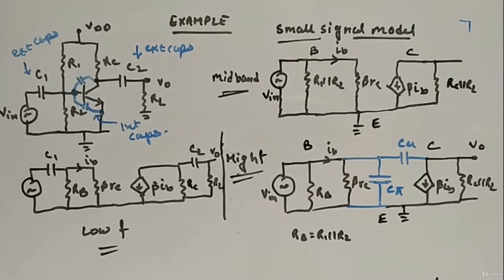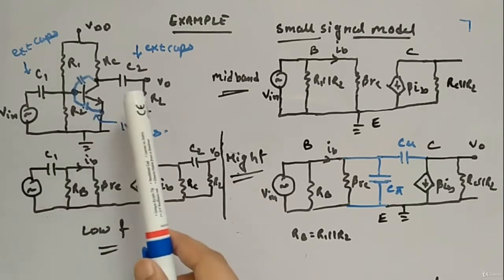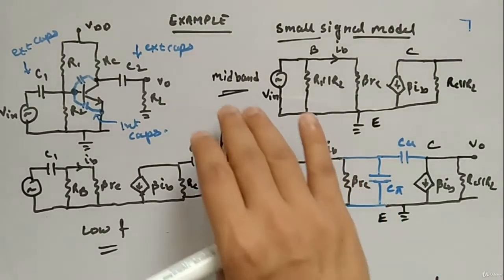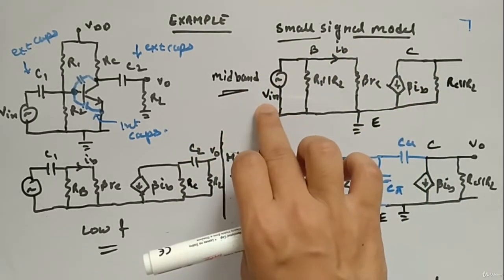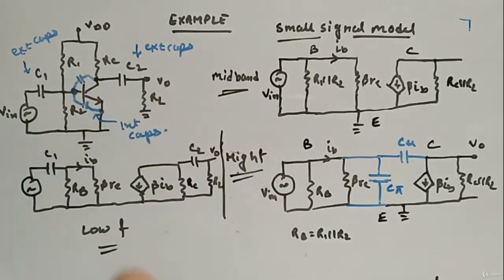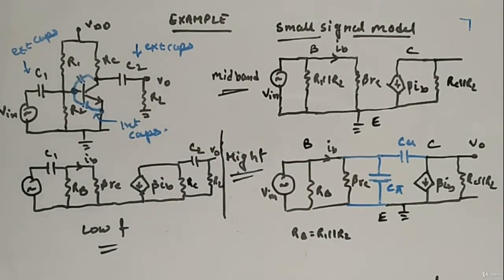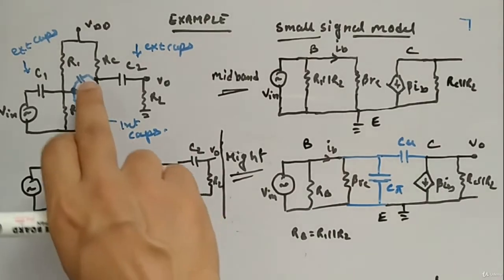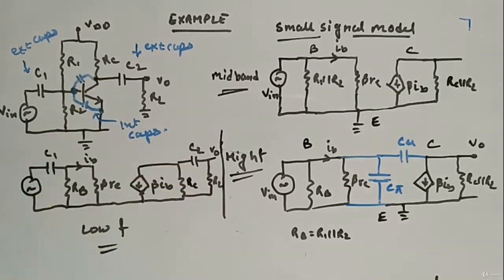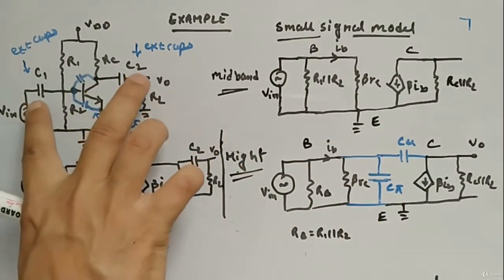Now, just to differentiate the models — consider a common example with R1, RC, R2, an NPN transistor, Vin, C1, C2, and RL. There are three different small-signal models. The mid-band small-signal model has Vin present, coupling capacitors C1 and C2 shorted, and internal capacitors open. External capacitors are those outside the transistor; internal capacitors — Cpi and Cmu — are inside the transistor between base-emitter and base-collector respectively.